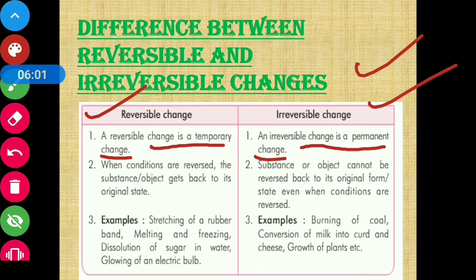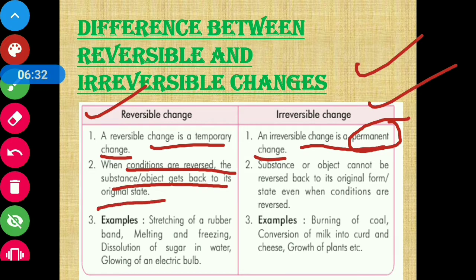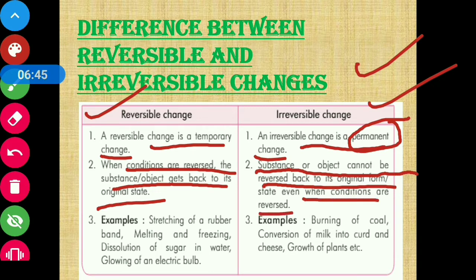Reversible change ko dubara original form mein laaya ja sakta hai — isliye reversible change temporary change hoti hai. Lekin irreversible change ko dubara reverse nahi kiya ja sakta — isliye yeh permanent change hai. When conditions are reversed, in a reversible change the substance gets back to its original state; but in irreversible changes, the substance cannot be reversed back even when conditions are reversed.